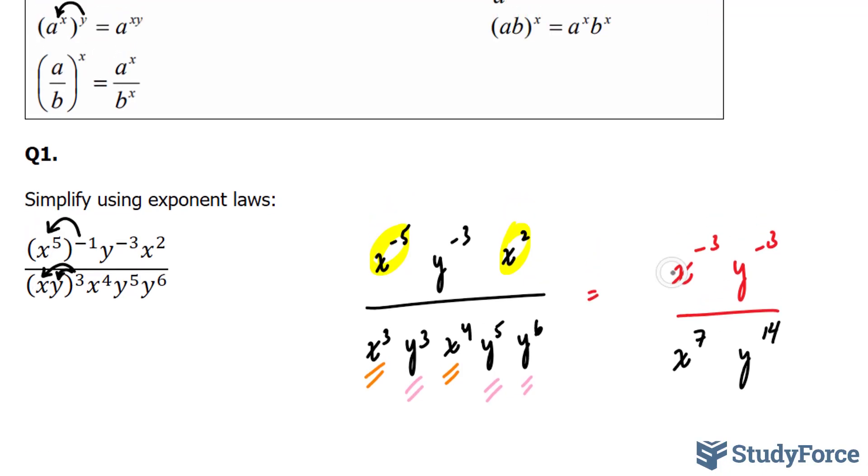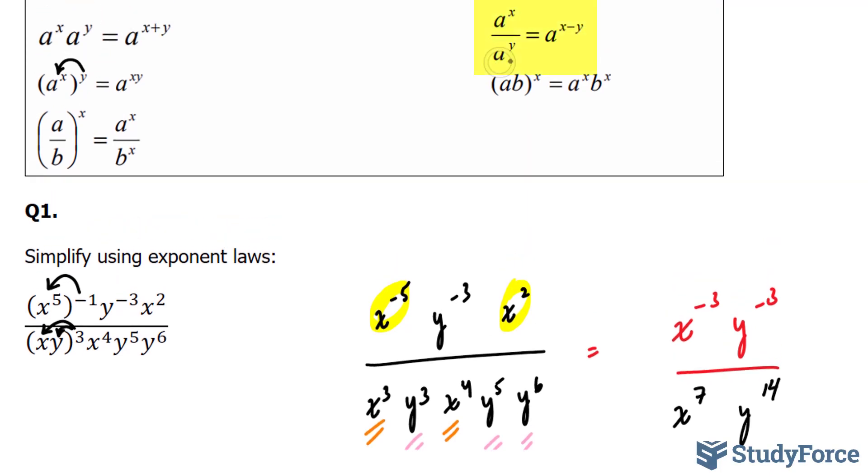You'll notice that you have an x at the top and x at the bottom. And in this case, you'll use the quotient rule, which is shown right here. And it says that if the bases are the same, you will subtract the exponents.